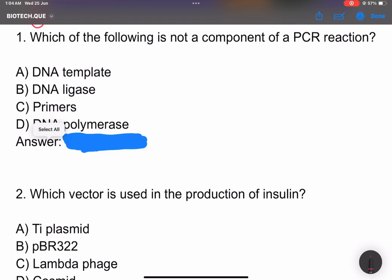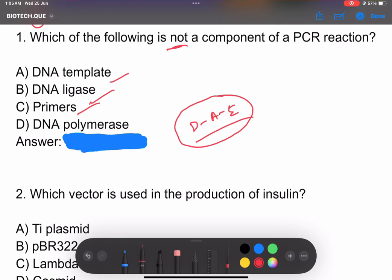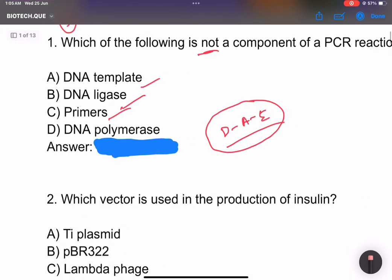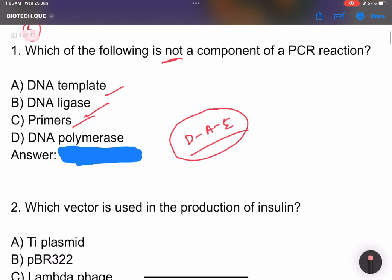First question: Which of the following is not a component of PCR reaction? A) DNA template, B) DNA ligase, C) Primers, D) DNA polymerase. PCR reaction has three steps: denaturation, annealing, extension. The answer is B, DNA ligase. PCR reaction involves DNA template, primers, and DNA polymerase.